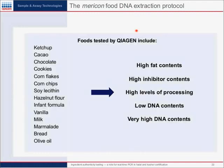Foods tested with the Mericon food DNA extraction protocol include ketchup, cocoa, chocolate, cookies, cornflakes, corn chips, soy lecithin, hazelnut flour, infant formula, vanilla, milk, marmalade bread, olive oil, and honey pollen — many different kinds of food with varying properties: high fat content, high inhibitor content, high levels of processing, low DNA content, or very high DNA content. All these difficult and variable food types can be handled by the one-for-all protocol.